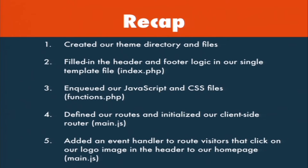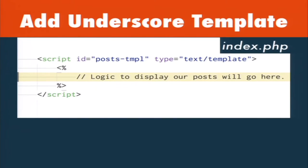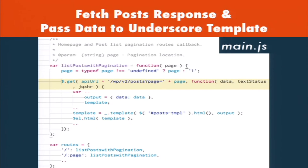To recap: I've created the theme directory with files, filled in the header and footer logic in our single template file, enqueued our JavaScript and CSS in functions.php, and in our JS we defined routes, initialized the client-side router, and added an event handler for the logo click. Now let's start having some fun with JSON endpoints. At the bottom of my index.php template I'm going to create a JavaScript template with the script ID post-tmpl, and then go back to the list_posts_with_pagination callback to start filling in the logic.